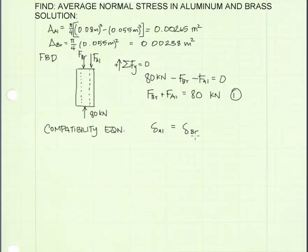Here's the equation of compatibility. Delta aluminum equals delta brass. I expand both these terms with PL over AE. For delta aluminum, the force P is the force in the aluminum, L is the length, the cross-sectional area is 0.00265 meters squared, and E is the modulus of elasticity of the aluminum, 73.1 gigapascals.